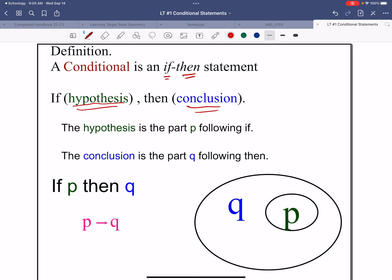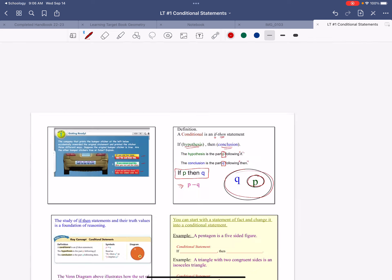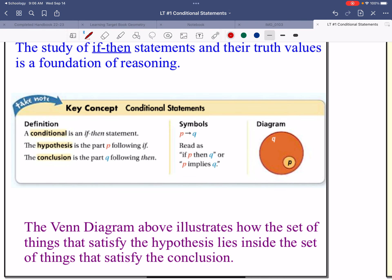The hypothesis is the part we use the letter P for following the if. The conclusion is the part that we call Q following the then. So we say if P, then Q, written P arrow Q. And you can see if P occurs, then Q will occur in a concept map. It's called a conditional statement. If P happens, then Q will happen. So let's look at some examples.